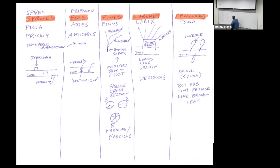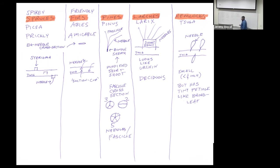If it's two needles per fascicle, each needle is split right down the middle; if five, split in fifths like slices of pie. Larches are in the genus Larix and they are deciduous. They have short shoots off the twig, and then a whole bunch of needles come off each short shoot — giving a kind of sea-urchin look. The short shoot is large; the sterigma on spruce is small.